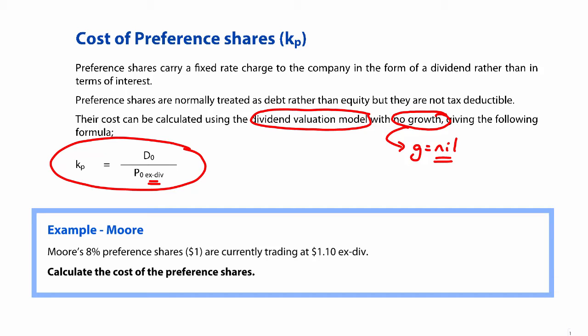So let's have a look at it with an example. Nice and straightforward. The example that we've got is called Moore. It wants us to work out the cost of preference shares. So the cost of preference shares that it wants is kp. Here you can see that the coupon rate is 8%, which we will apply to the par value of a dollar. And the market value is at $1.10. It's quoted ex-div, so that is P0 ex-div.